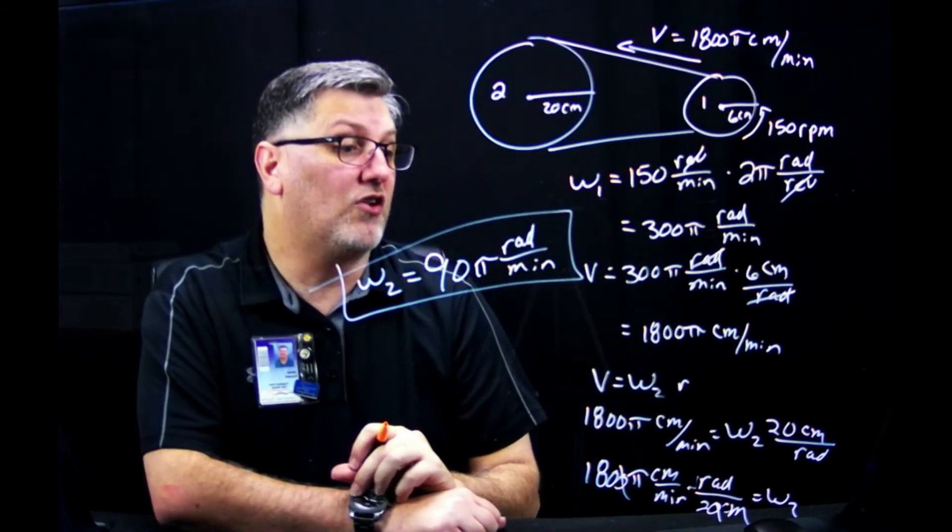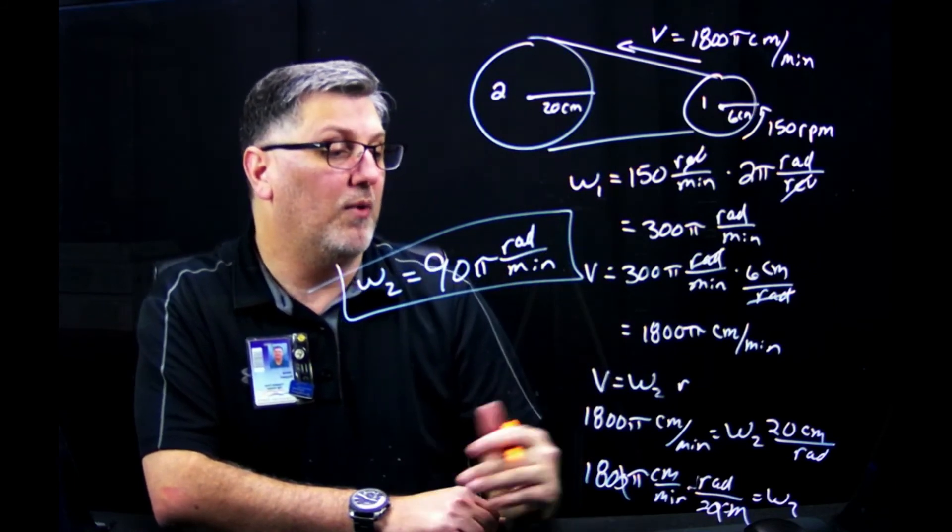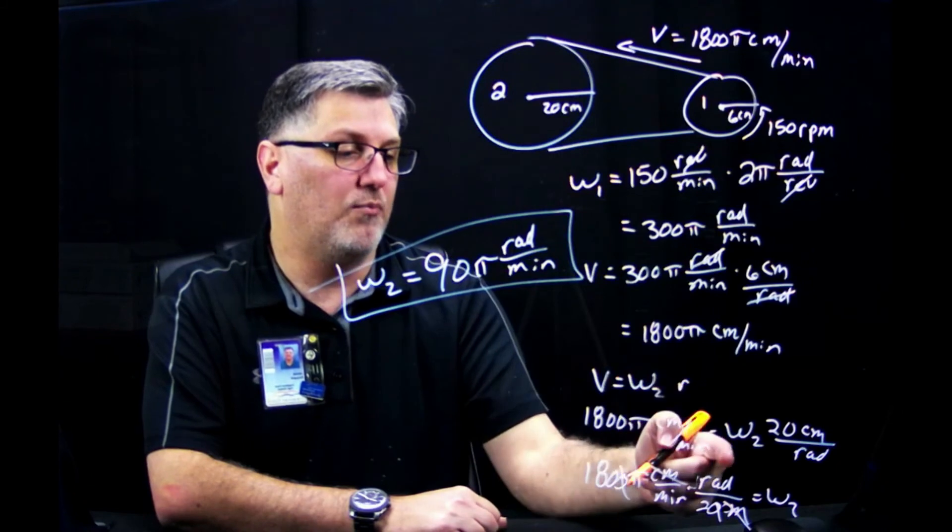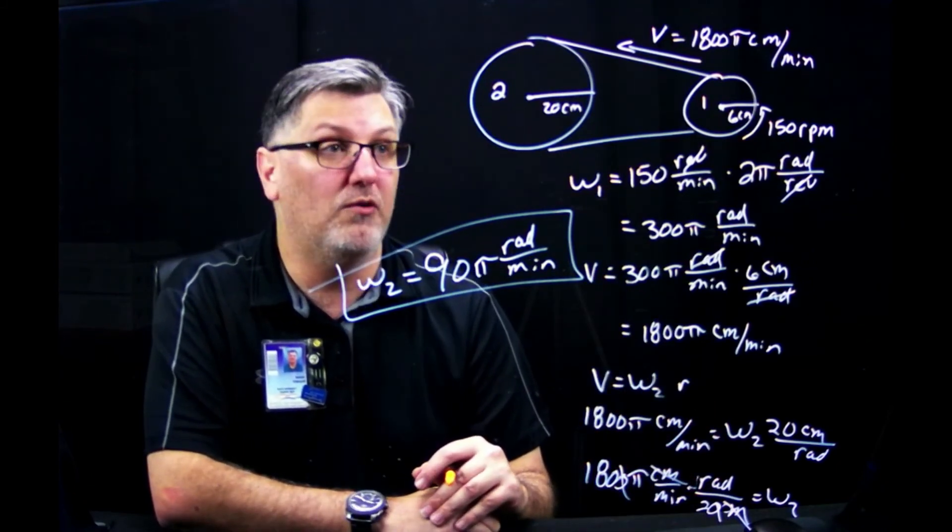Not terribly bad. You just kind of have to stay in the process, just stay step by step. Make sure your units match up, because if you look here, my centimeters canceled, which left me radians per minute, which is perfect, because that's what my angular velocity will be.